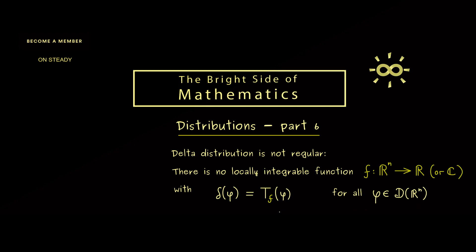Okay now as a reminder, T_f of φ was defined by the integral. So we integrate f(x) times φ(x). And we already showed in the last video that for a locally integrable function f this always defines a distribution. On the other hand if we put φ into the delta distribution we get out the value of φ at 0.